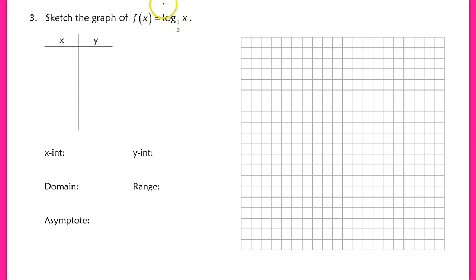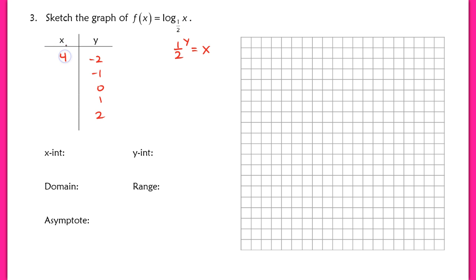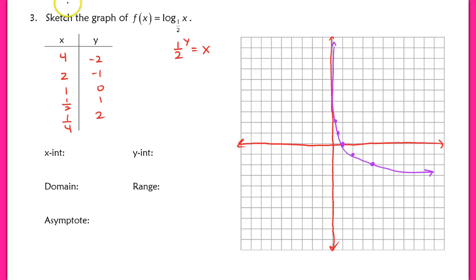In problem 3, if I want to change this into an exponential function, I have (1/2) to the y power equals x. When I plug in values from negative 2 to positive 2: (1/2) to the negative 2nd power gives me 4, (1/2) to the negative 1st gives me 2, (1/2) to the 0 is 1, (1/2) to the 1st is 1/2, and (1/2) squared is 1/4. These x values get closer and closer to zero, so I do have an asymptote at x equals 0.